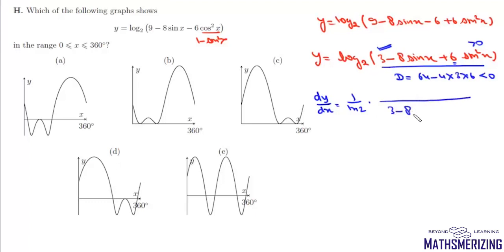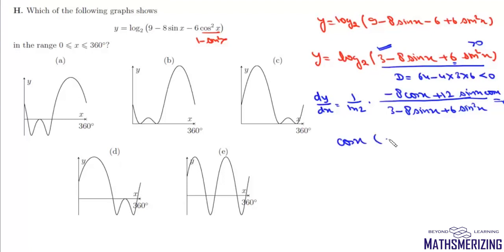Now we find the critical points. dy/dx equals (1/log2) divided by (3 - 8sinx + 6sin²x), multiplied by (-8cosx + 12sinx·cosx). Setting this equal to zero, we get cosx·(-8 + 12sinx) = 0.